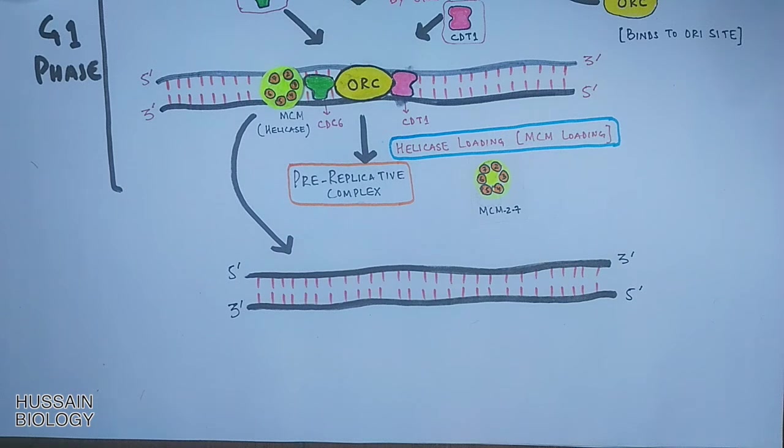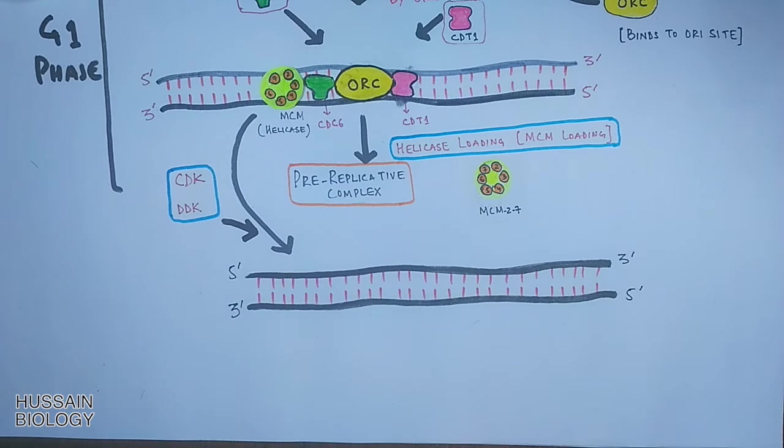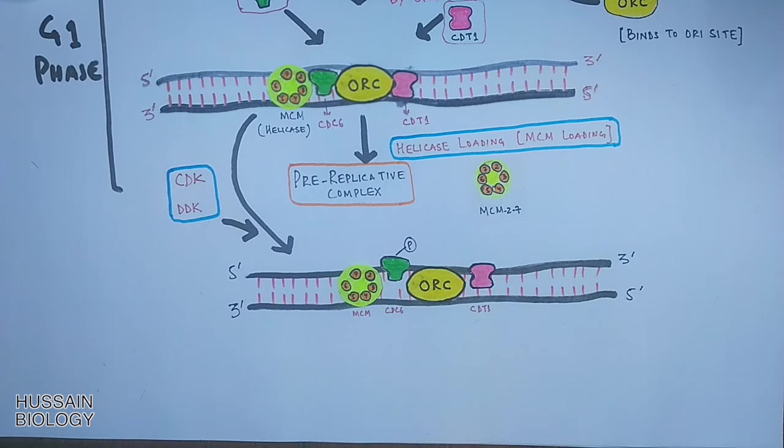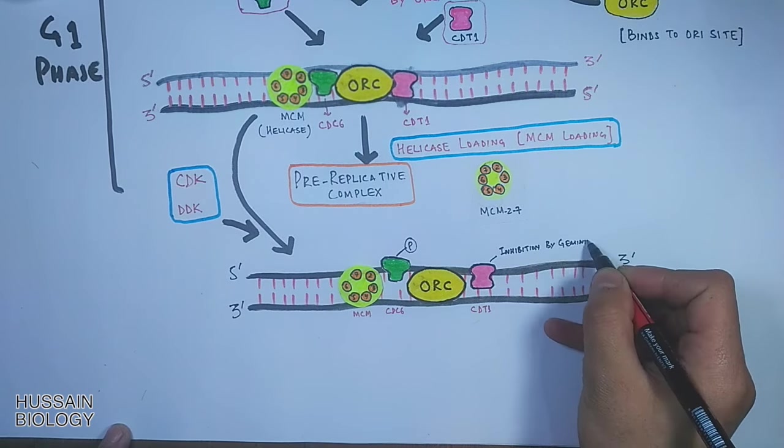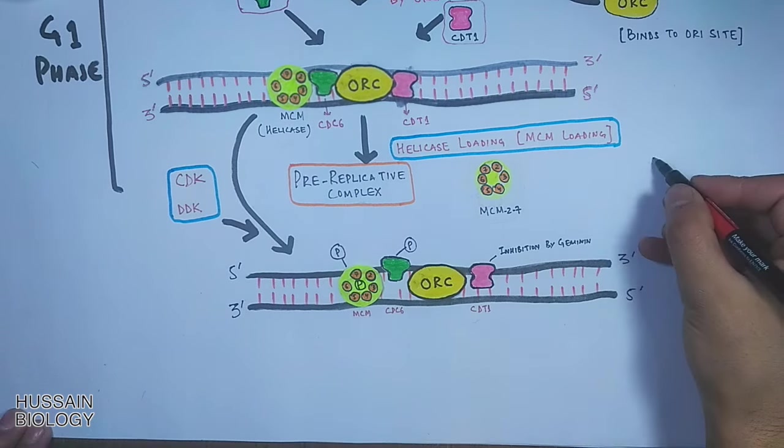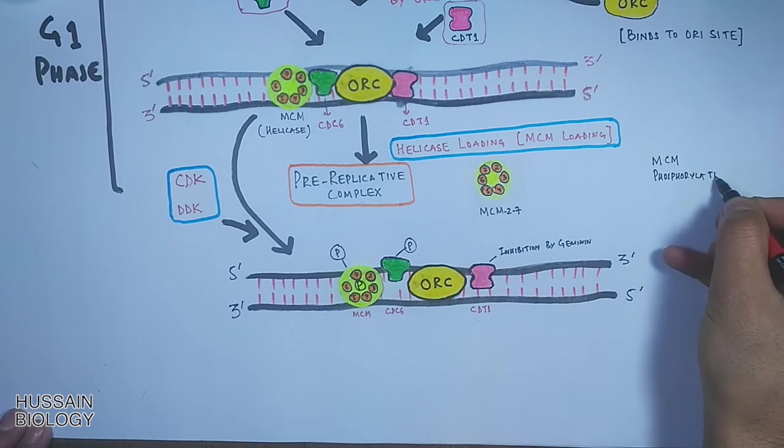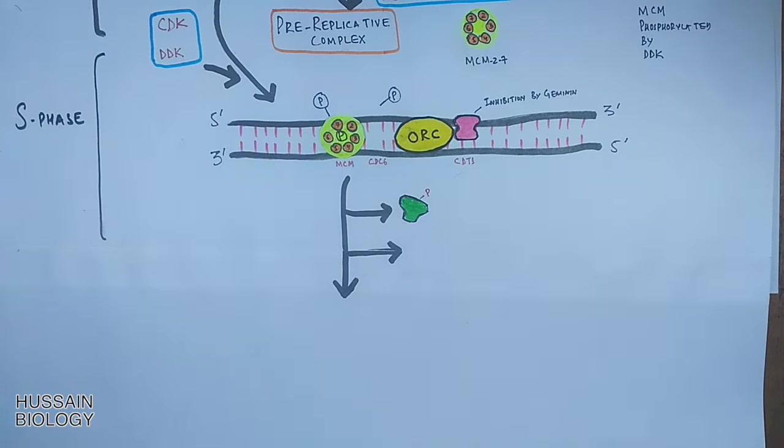Now from here there will be transition from G1 to S phase, and this transition is mediated by kinase enzymes like cdk and ddk enzyme. The cdk phosphorylates cdc6 and ddk phosphorylates mcm, that's helicase. And in this G1 to S transition state, the cdt1 is also inhibited by geminin protein and finally the ORC is also phosphorylated so that it does not recruit further initiation proteins.